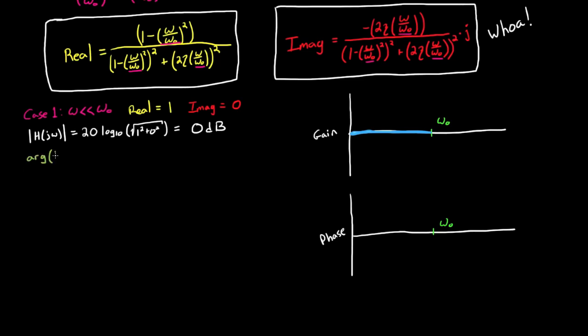For phase, it's the argument of h of j omega, which is the arctangent of the imaginary part divided by the real part, which is just 0 degrees up to the break frequency.